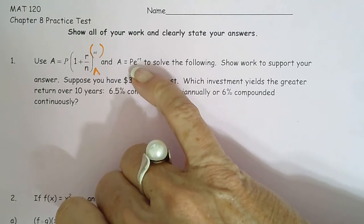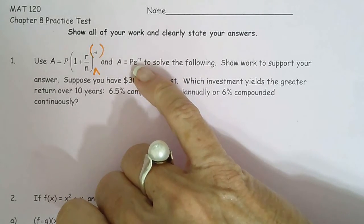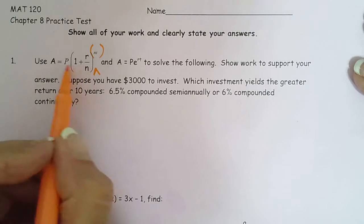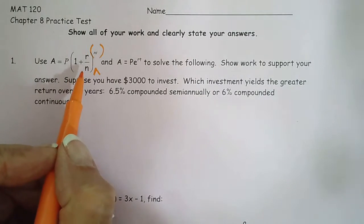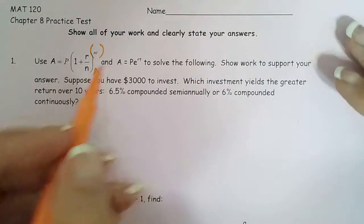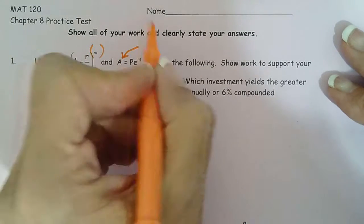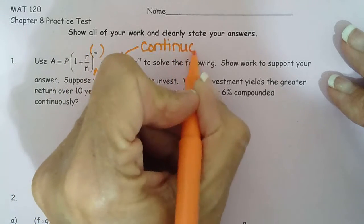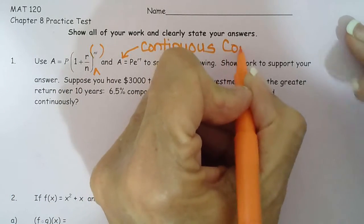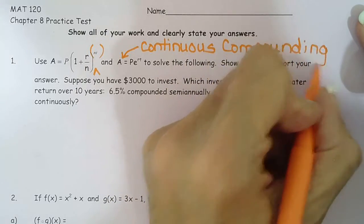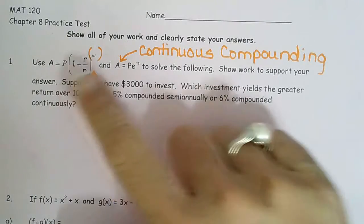Remember, E is a constant — it's called a universal constant, just like pi — and you plug that in using your calculator. The first formula is used if you can count the number of compounding periods, like semi-annually, quarterly, daily, or weekly. The second formula is used for an infinite number of compounding periods, which we call continuous compounding. Any time it says compounded continuously, that's when we switch from the first formula to this one.